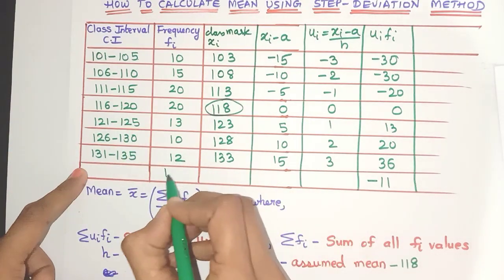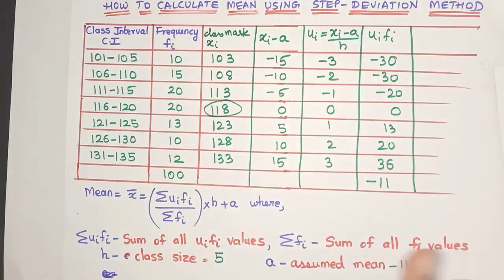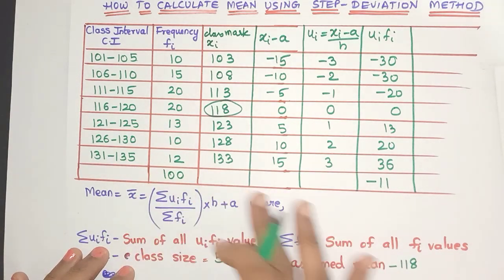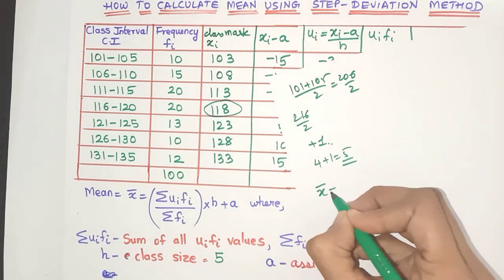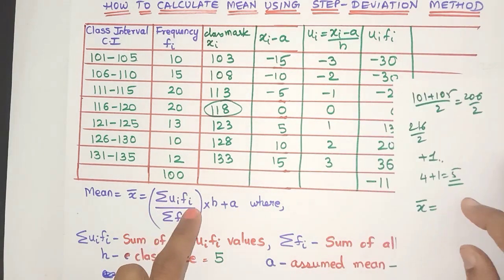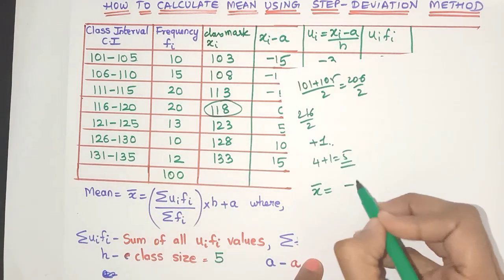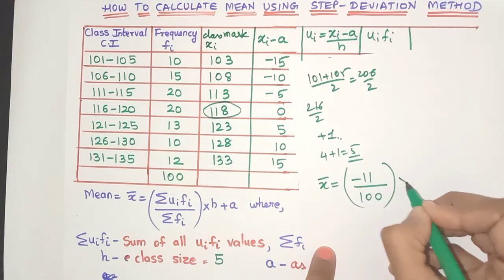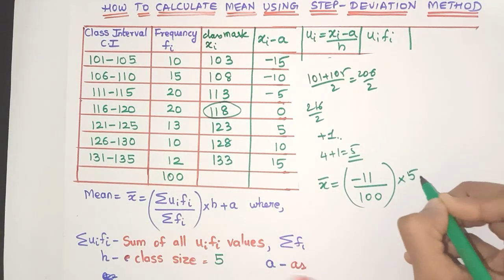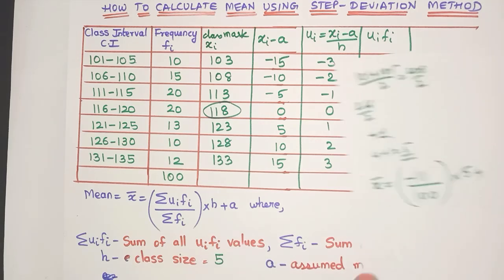Now all the values we already have, h and a. So let's go ahead and compute the mean value. x bar is nothing but sigma ui fi, which is minus 11, divided by sigma fi, which is 100, multiplied by h is 5, plus a is we have taken as 118.